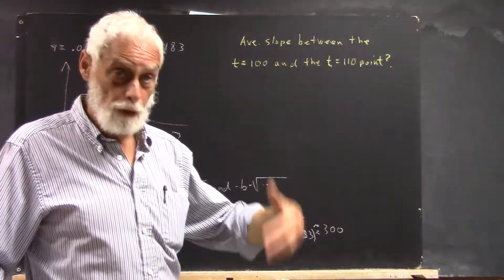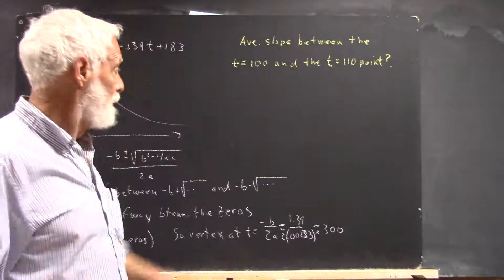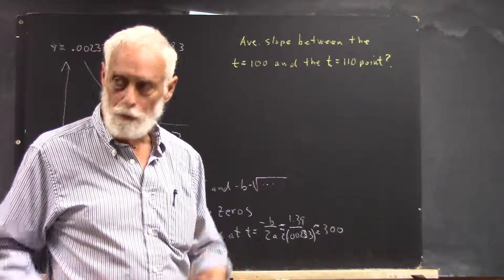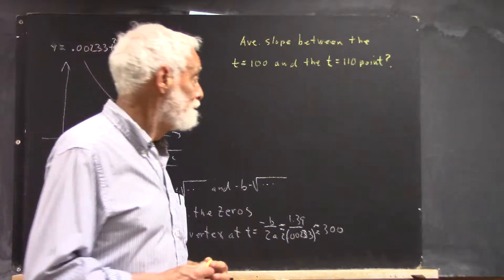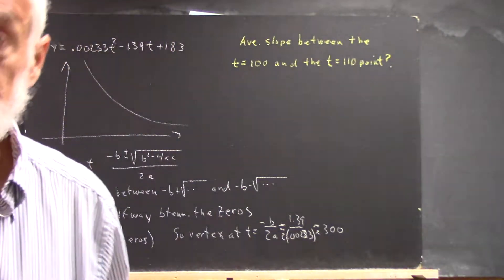That's the same as doing y2 minus y1 over x2 minus x1. But think rise over run instead of a formula. Think rise over run. That makes sense.